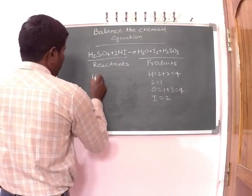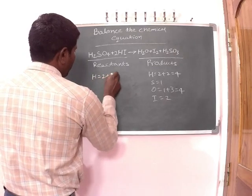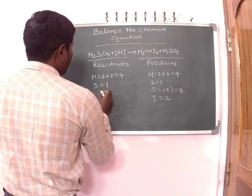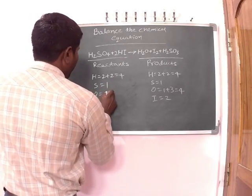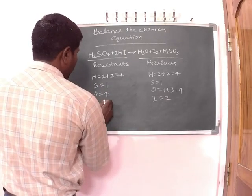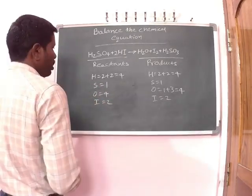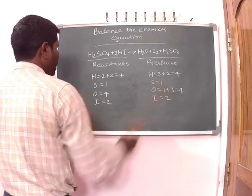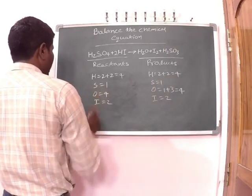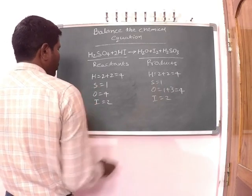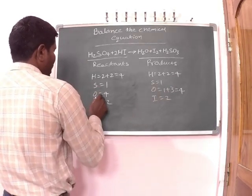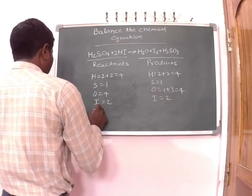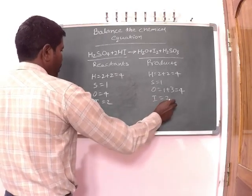Now the number of hydrogen atoms in the reactants are 2 plus 2, that equals to 4. The number of sulfur atoms is 1. The number of oxygen atoms are 4. The number of iodine atoms are 2. In the reactants side: hydrogen is 4, sulfur is 1, oxygen is 4, iodine is 2. In the products side: hydrogen is 4, sulfur is 1, oxygen is 4, and iodine is 2.